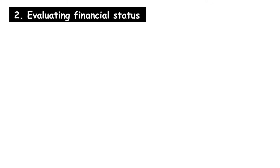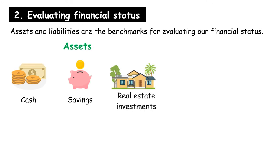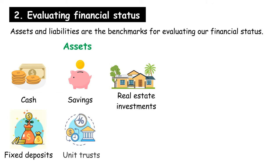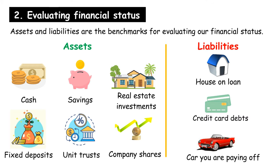Evaluating financial status: Assets and liabilities are the benchmarks for evaluating our financial status. Examples of assets are cash, savings, real estate investments, fixed deposits, unit trusts, or company shares. Liabilities are bank loans, credit card debts, and other financial obligations. We should know outstanding payments such as unsettled rent, utility bills, and credit card bills. Evaluating our financial status helps us measure our performance in achieving our financial goals.